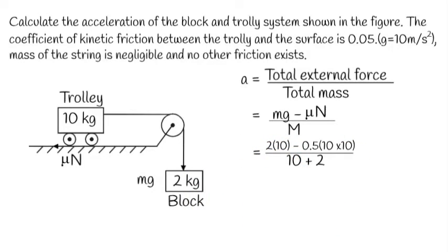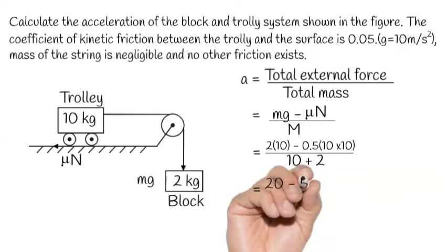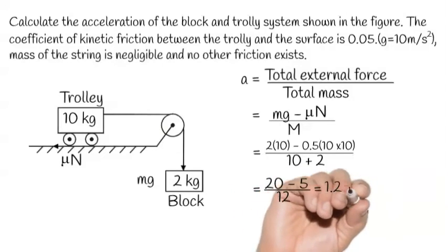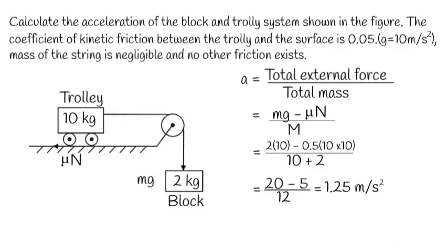Which will be equal to 20 minus 5 upon 12. Here we will get our answer: 1.25 meters per second squared. That's it for today.